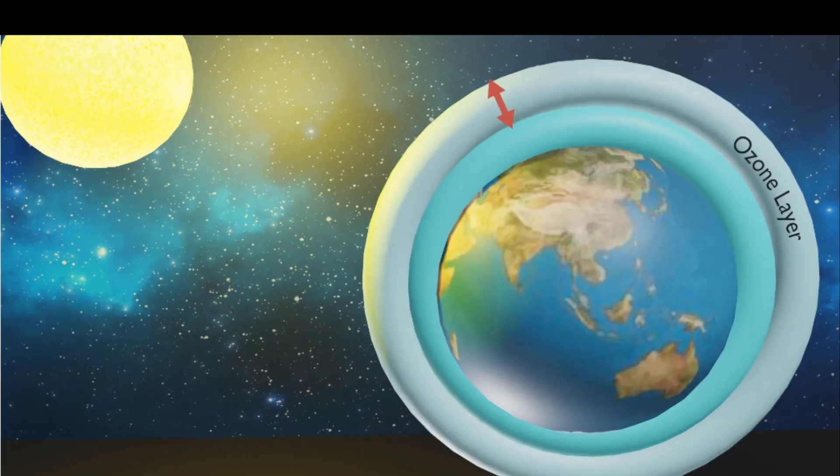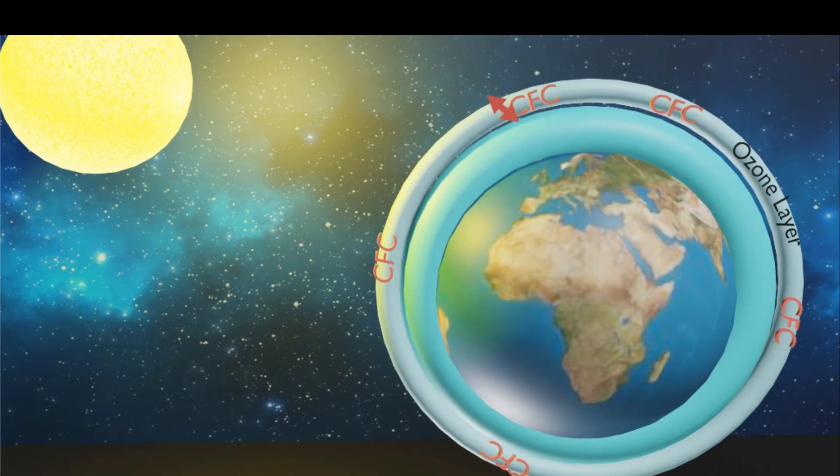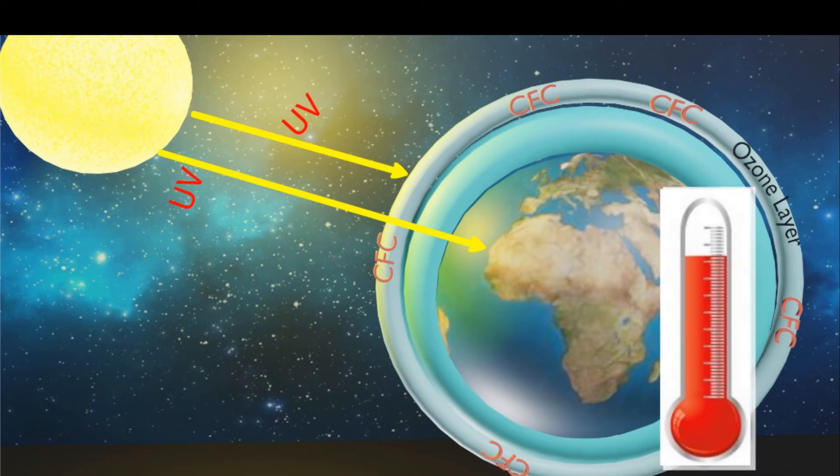Through the thin ozone layer, ultraviolet rays of the sun pass and reach the earth where they affect life by causing serious diseases like skin cancer and eye problems. These ultraviolet rays also increase the temperature of the earth.